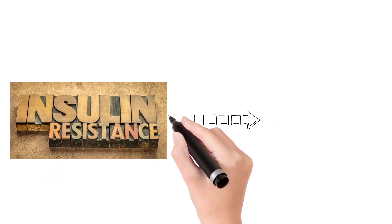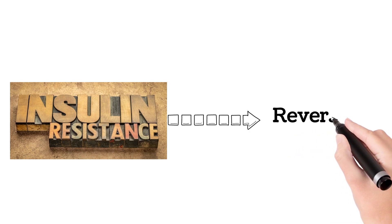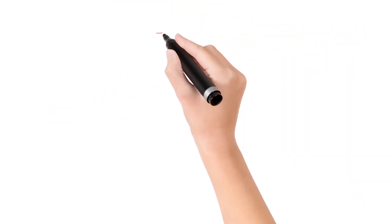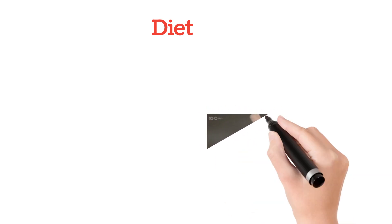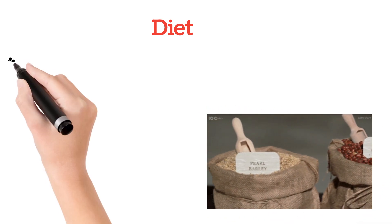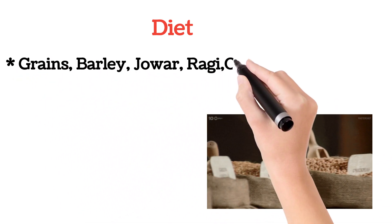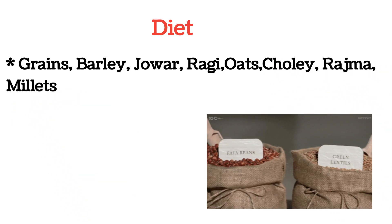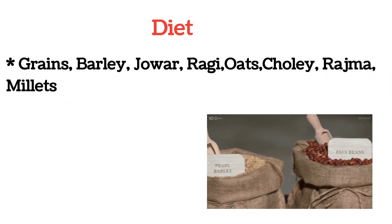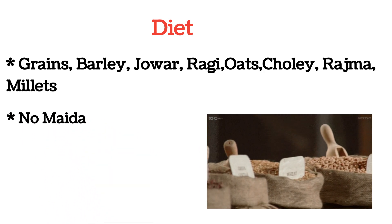This insulin resistance can be reversed by following a certain protocol. Proper diet should be taken—people should include a variety of grains: barley, jowar, ragi, oats, chickpeas, rajma, millets. All these kinds of healthy foods should be taken, and they should limit refined flour.